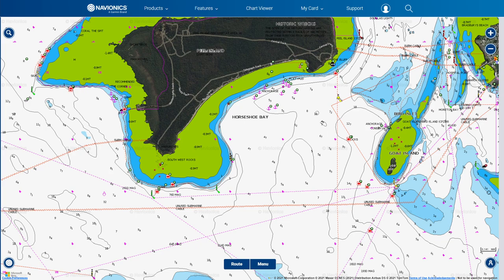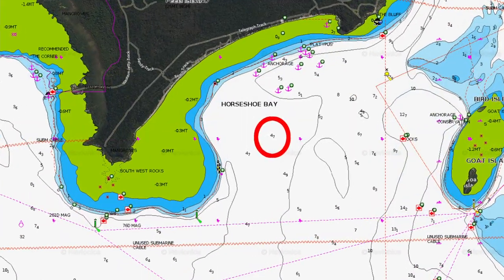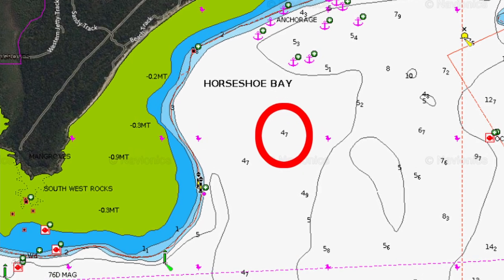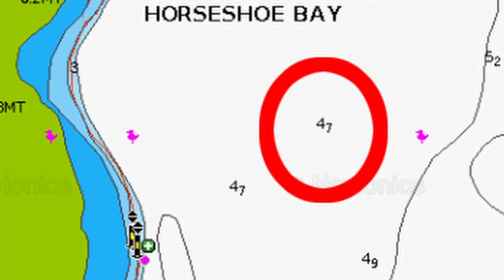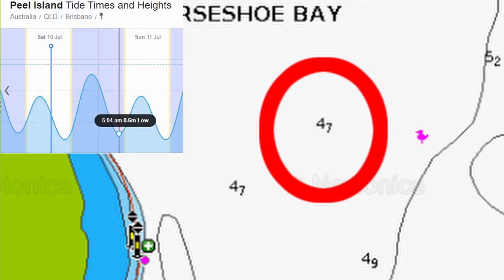Let's have a look at another example a little bit closer to the island. The chart shows a water depth of 4.7 meters, and supposing we want to know the depth of water at the low tide at 5:04 on the following Sunday — the tide charts tell us that will be a 0.6 meter tide. Again we add it to the 4.7 and we should have 5.3 meters of water there.